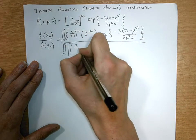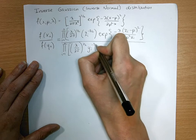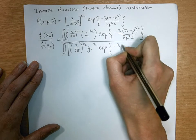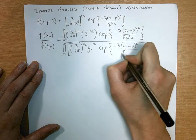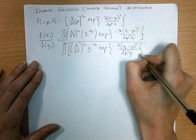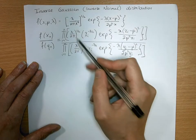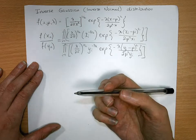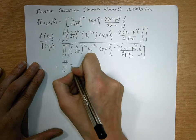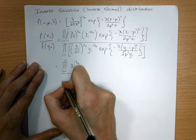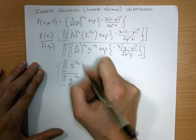So the denominator has (lambda over 2pi) to the power of one half, times y_i to the minus 3/2, times the exponential of minus lambda times (y_i minus mu) squared over (2 mu squared y_i). The first thing we can see is that the (lambda over 2pi) terms cancel immediately — they're the same in the numerator and denominator. So we're left with the product from i equals 1 to n of x_i to the minus 3/2, divided by the product from i equals 1 to n of y_i to the minus 3/2.